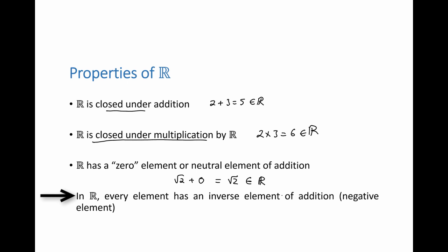In R, every element has an inverse element of addition or a negative element. Indeed, if I add root two to negative root two, which is the inverse element of addition of root two, I'm going to get that zero element.